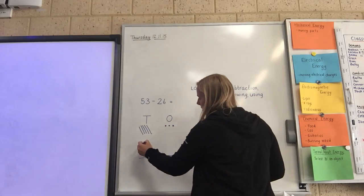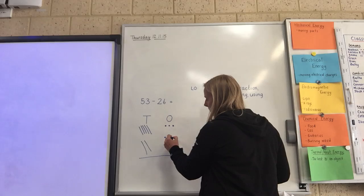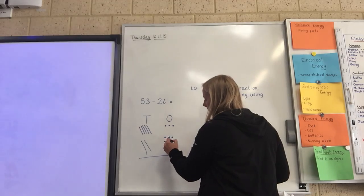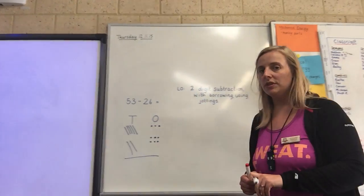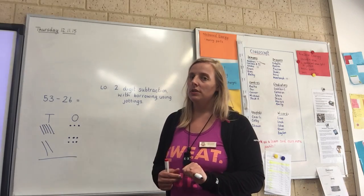Take away 26, which is two tens, two rods, and six wands. So if you pause your video now, you can pop your digits into the correct columns using jottings.